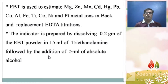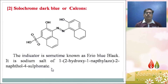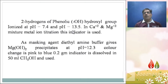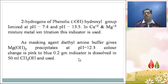Solochrome Dark Blue, also known as Calcon or Erio Blue Black, is the sodium salt of 1,2-hydroxy-1-naphthylazo-2-naphthyl-4-sulfonate. The phenolic OH hydrogen ionizes at pH 7.4 and pH 13.5. In calcium and magnesium mixture metal ion titration, this indicator is used. Diethylamine buffer gives magnesium hydroxide precipitate at pH 12.3; the color change is pink to blue. 0.2 gram of indicator is dissolved in 50 ml methanol and used. The structure of Solochrome Dark Blue is similar to EBT, present in the form of H2IN⁻¹.